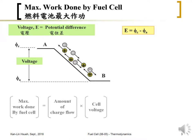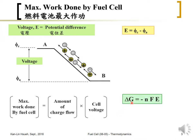So the maximum work that can be done by the fuel cell is equal to the amount of charge flowing through the external circuit times the cell voltage. In equation form, the maximum work done by the fuel cell is ΔG, and the amount of charge flow is equal to -nF, where n is the number of electrons. This charge flow through the external circuit multiplied by the cell voltage gives the maximum work.